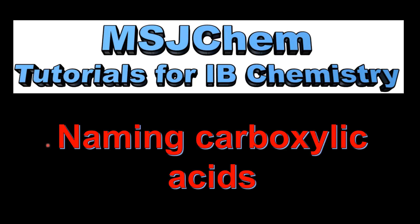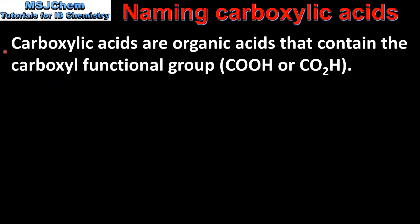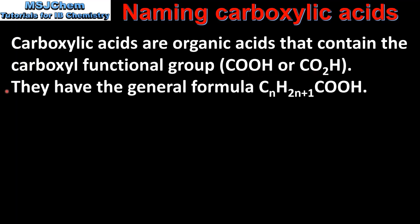This is MSJChem. In this video I'll be looking at naming carboxylic acids. Carboxylic acids are organic acids that contain the carboxyl functional group. The carboxyl functional group is represented by COOH or CO2H. They have the general formula CnH2n+1COOH.